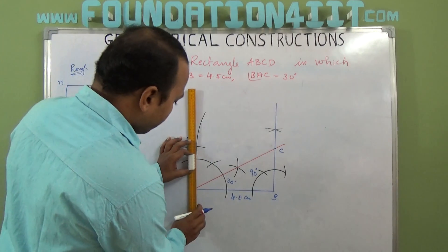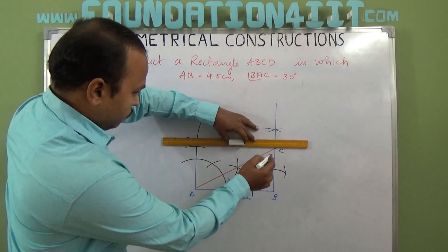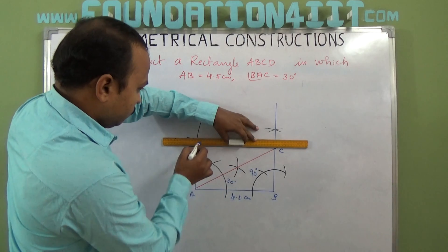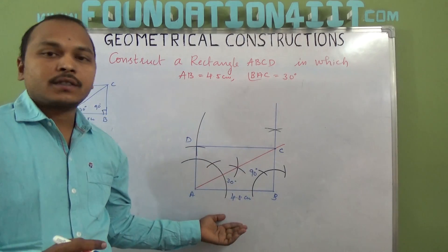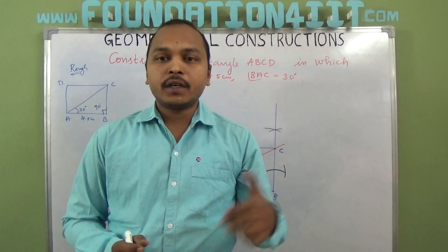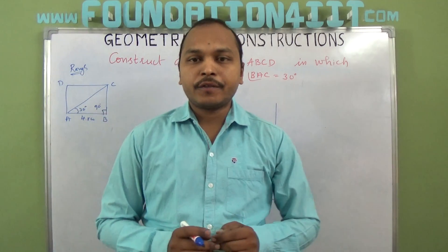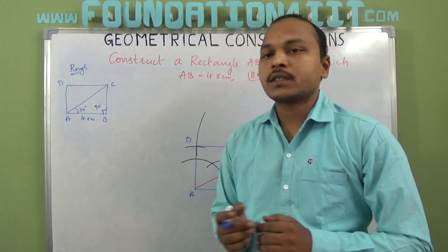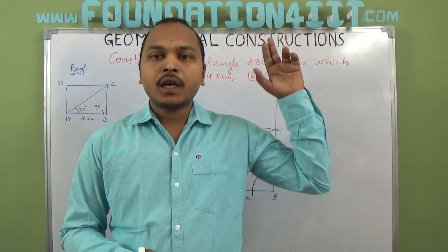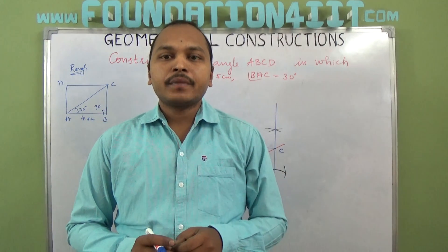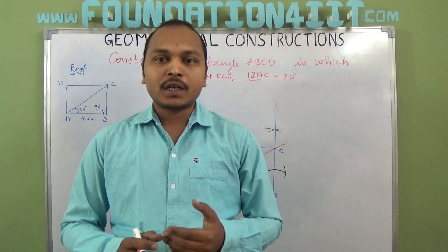Now using a scale, join AD and CD. So this is the way we can construct a rectangle when one side and the angle between the diagonal and the side are given — here BAC is 30 degree and AB is 4.5 cm. For the written steps of construction, I am providing a link in the description below. Click the link — topics are available class-wise there.